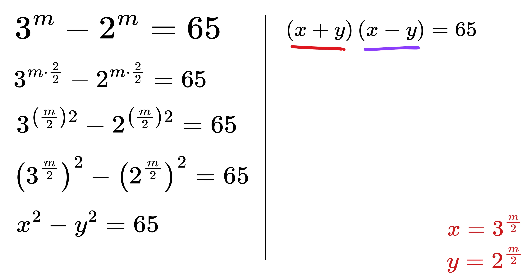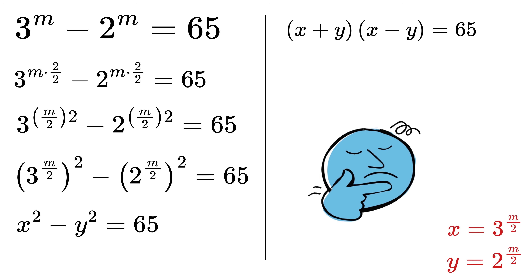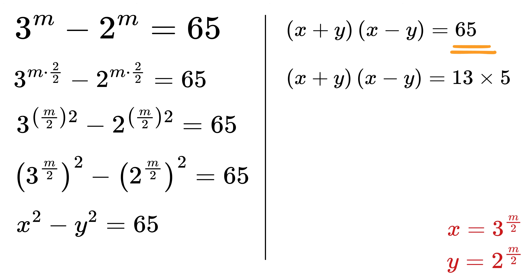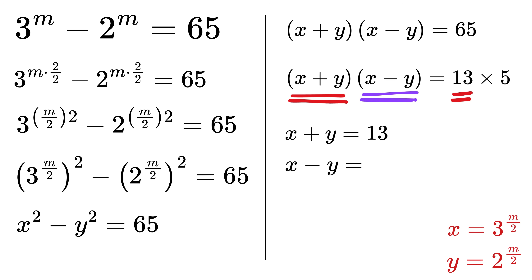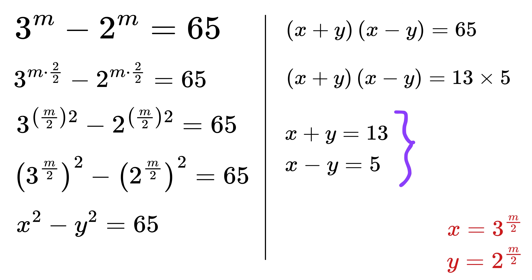Now you can see that we have a product of two numbers here, and therefore we will have to factorize 65 such that we can write it as a product of two numbers. Here's the key insight: 65 can be broken into 13 times 5, and that's exactly what we need. We assume that the first bracket, x plus y, is equal to 13, and the second bracket, x minus y, is equal to 5. This is a system of two equations with two variables which can be solved easily.